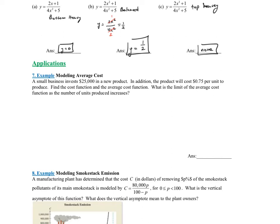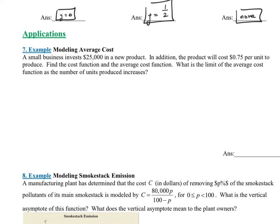Let's look at some applications of this. It says a small business invests $25,000 in a new product. In addition, the product will cost $0.75 per unit to produce. Find the cost function and the average cost function. What is the limit of the average cost function as the number of units produced increases? So let's step back and see what they just told us.